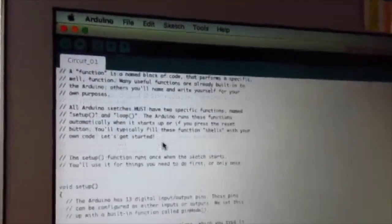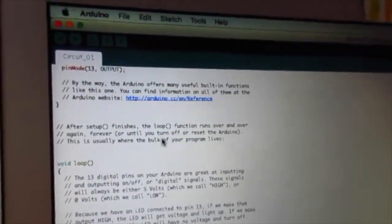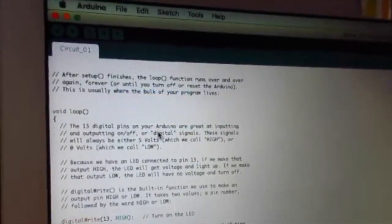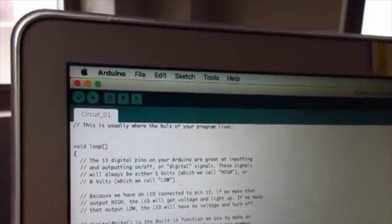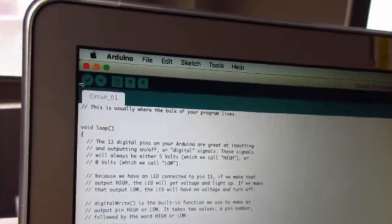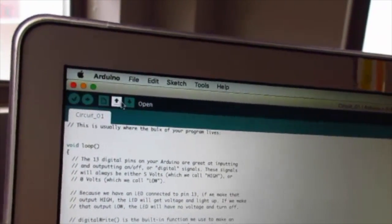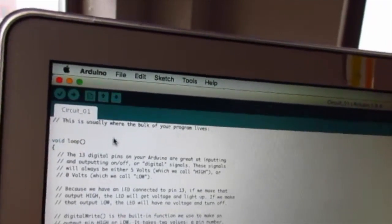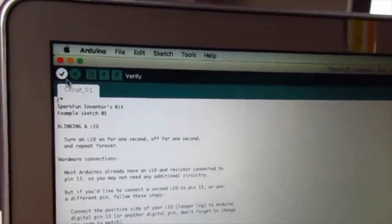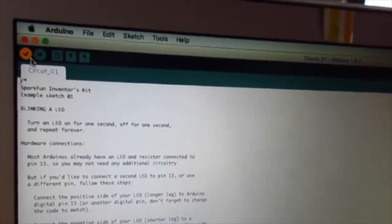Then you're going to go and open your circuit one on your Arduino software. This program allows you to blink the LED light when uploaded to the Arduino. You have five buttons: your verify, upload, new, open, and save. Because this is already written, we can go right ahead and verify the code.